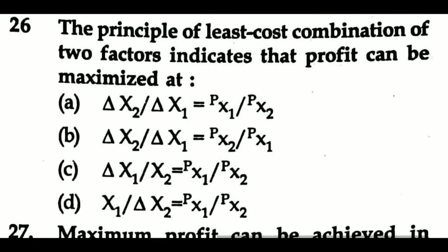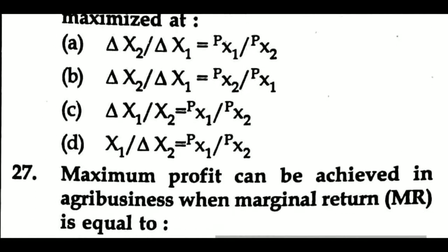Question 26: The principle of least cost combination of two factors indicates that profit can be maximized at — Option A: ΔX2/ΔX1 = PX1/PX2, Option B: ΔX2/ΔX1 = PX2/PX1, Option C: ΔX1/X2 = PX1/PX2, Option D: ΔX1/ΔX2 = PX1/PX2.